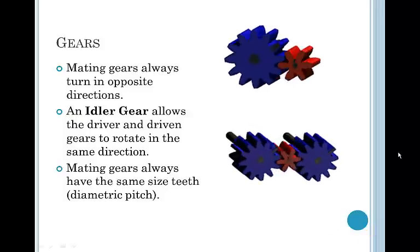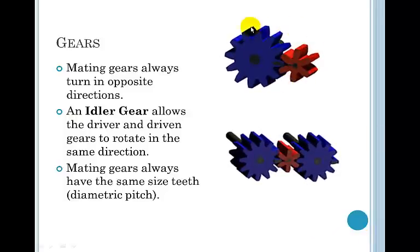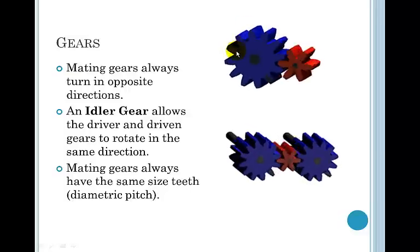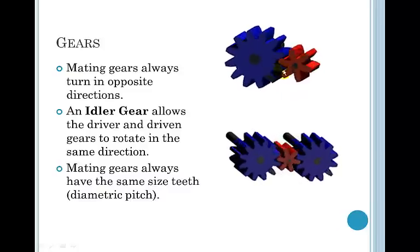Two gears that mate always turn in opposite directions. You'd use a gear in the middle called an idler gear to allow the driver and the driven to rotate in the same direction. So if you'll look here on the top of the page, you can see that the blue gear is moving clockwise, so the red gear is moving counterclockwise. And so it will go clockwise, counterclockwise, back and forth through a gear train.